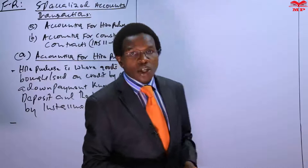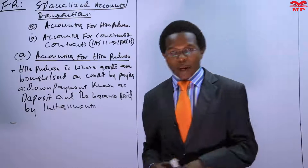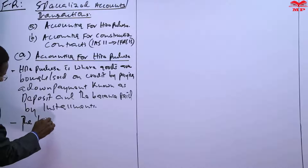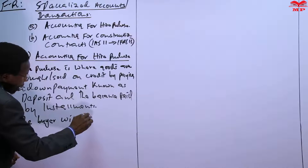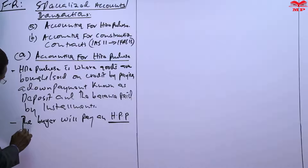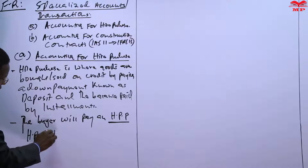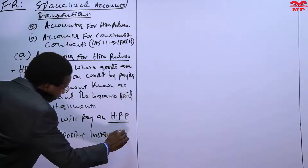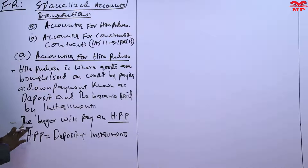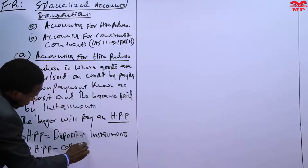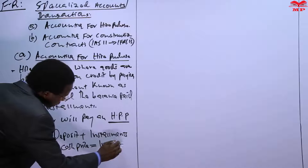In hire purchase, you will end up paying a price known as the hire purchase price. So the buyer will pay the hire purchase price, HPP. HPP is the hire purchase price, and it is simply the deposit plus all the installments — that is the HPP. You should remember that the difference between HPP and the cash price will actually be the interest — that would be the interest expense.